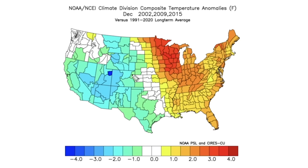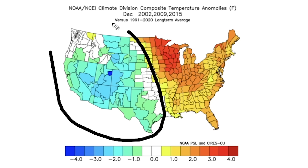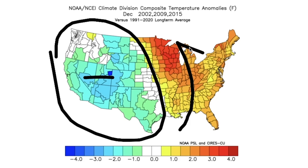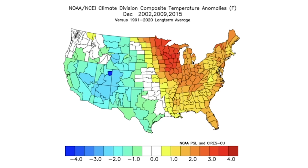What's interesting is that in December across all of these analog years, we featured cold temperatures out west with warm temperatures in the east. This is a great opportunity to talk about what a negative PNA pattern looks like — it looks exactly like this. Colder temperatures out west mean warmer temperatures in the east, and that is exactly what we're seeing in the Decembers of all of these years.